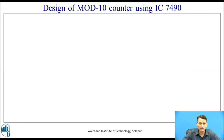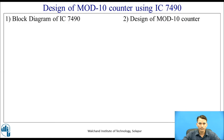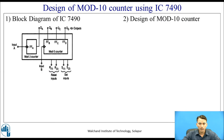Let us design a mod-10 counter using IC7490. IC7490 contains a mod-2 counter and a mod-5 counter. When these two are connected together, the result is multiplication: 2 × 5 = 10, so it works as a mod-10 counter.